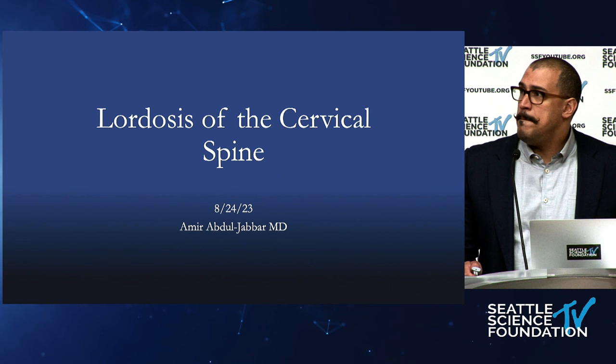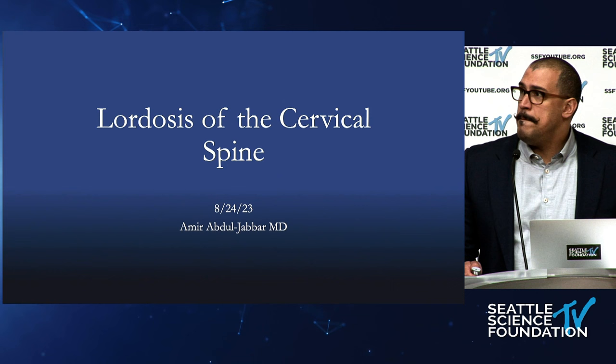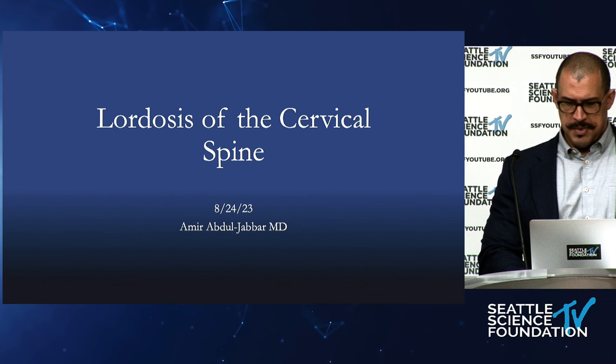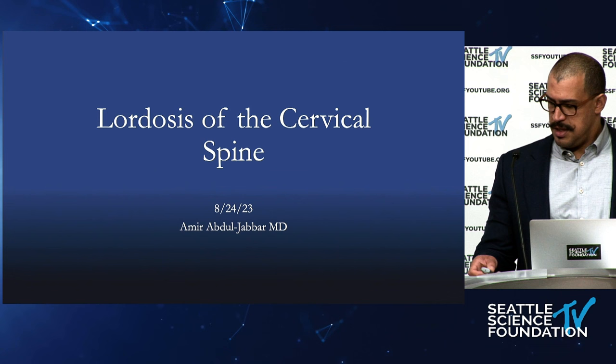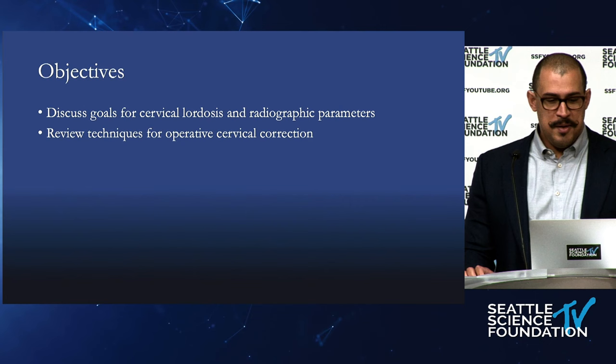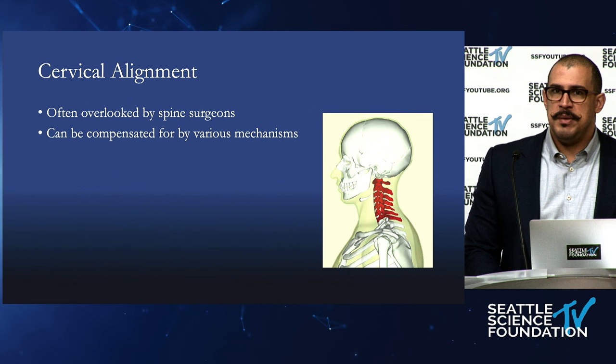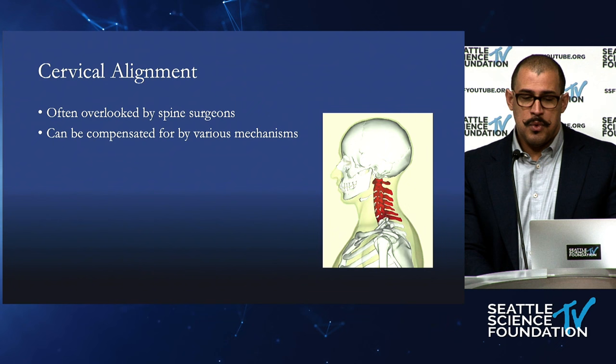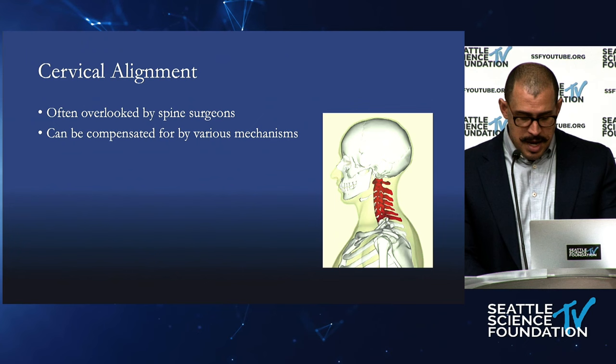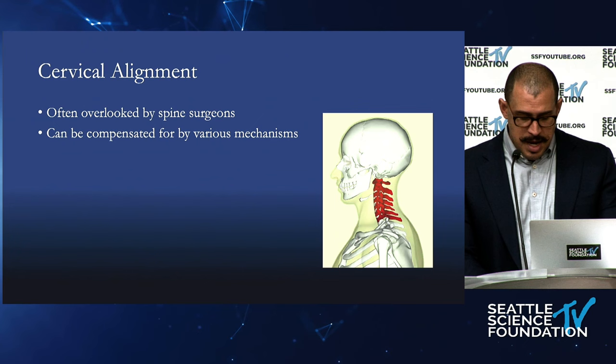These are some things I think have been helpful in my practice in terms of examining the cervical spine — measurements, looking at what is appropriate. Looking at cervical alignment can often be overlooked. Many of us do ACDF and feel that maybe it's not the biggest or most important aspect of that procedure. People do have a lot of mechanisms to compensate, whether through the rest of the spine or through the vertebrae above and below.